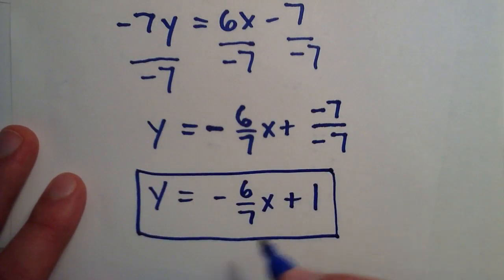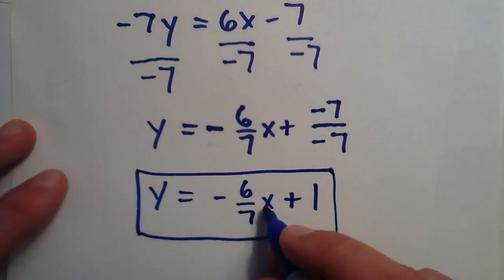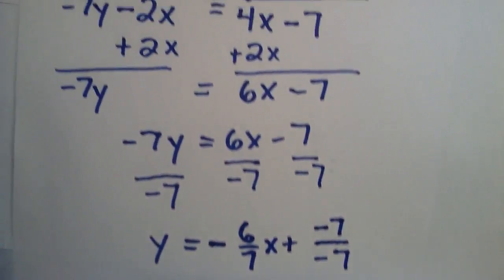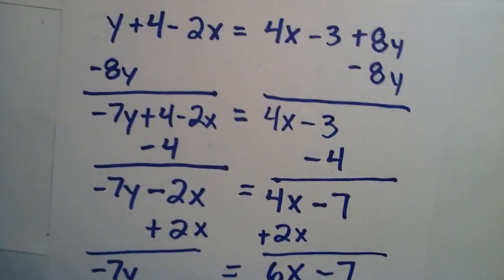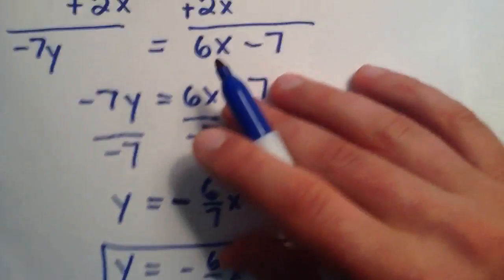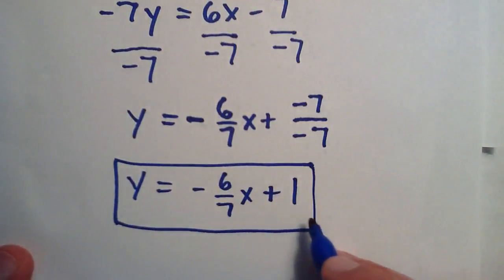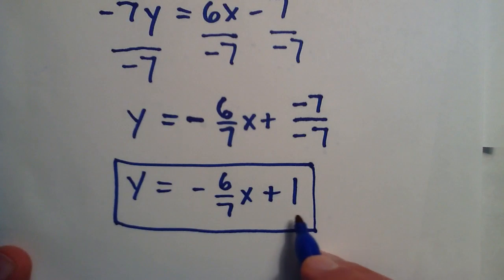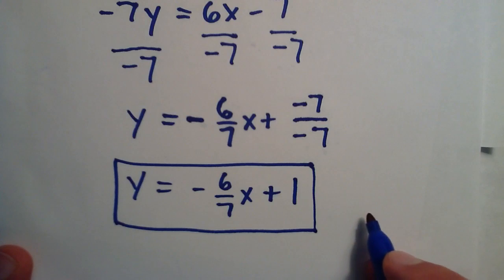And so now this expression right here is exactly the same as what we started with, all this stuff up here. But it's written in a much, much simpler form. And this is actually the slope intercept form of the line, which is really useful. And I'll be showing you that in some tutorials pretty soon.